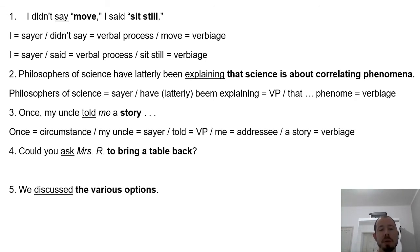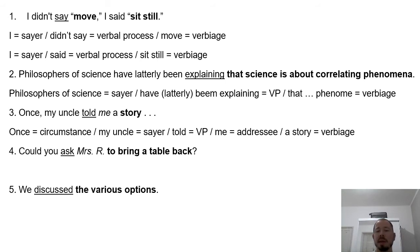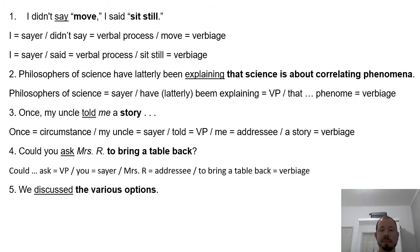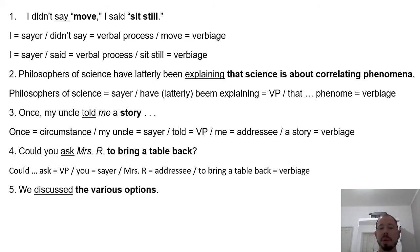Crystal clear? 'Could you ask Mrs. R to bring a table back?' We have here a verbal process — 'could ask.' 'You' is the person who is going to ask, so it's the sayer. 'To bring a table back' is what's going to be asked — so it's the verbiage. 'We discussed the various options.' 'We' is the sayer; 'discussed' is the verbal process; and 'the various options' is what was discussed — it's the verbiage.